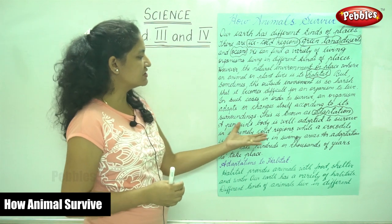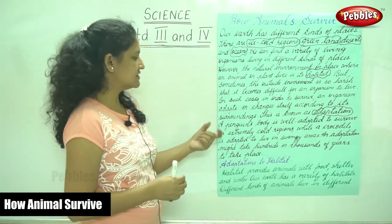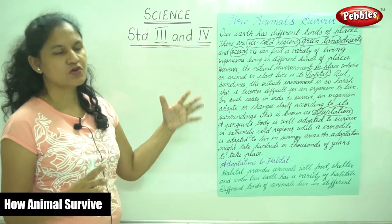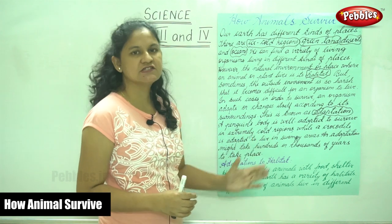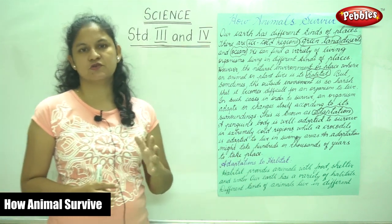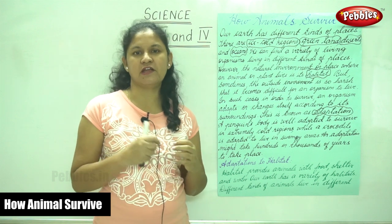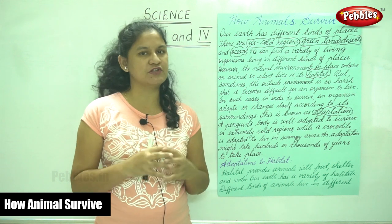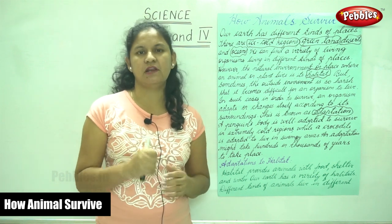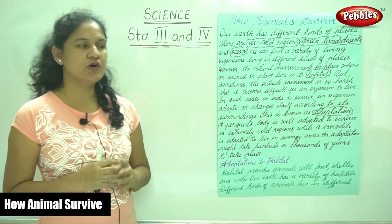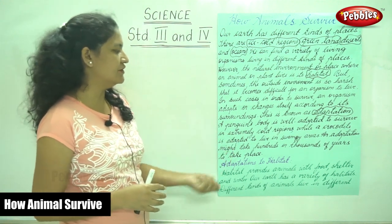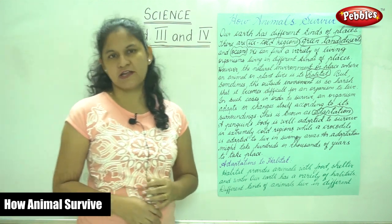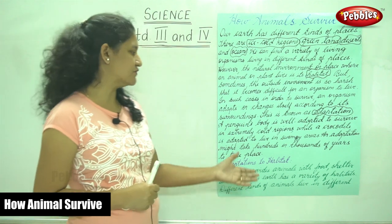A penguin's body is well adapted to survive in extremely cold regions, while a crocodile is adapted to live in swampy areas. The body of an animal is in such a way that it survives in particular places. For example, a penguin can survive in extremely cold regions, whereas a crocodile can survive in swampy areas.